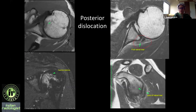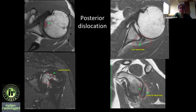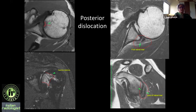A posterior inferior quadrant labral tear is very clearly seen. But what else is happening? There is a small depression at the anterior superior humeral head with marrow edema — that means there has been a posterior dislocation. This is a subtle reverse Hill-Sachs lesion. With a posterior labral tear, patients may say they feel the humeral head moving, whereas posterior dislocation may not present that way.